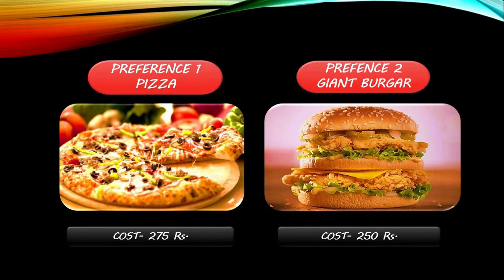Suppose a person with a budget of 300 rupees to spend on food has two preferences: preference one is a pizza costing 275 rupees, and preference two is a giant burger costing 250 rupees.